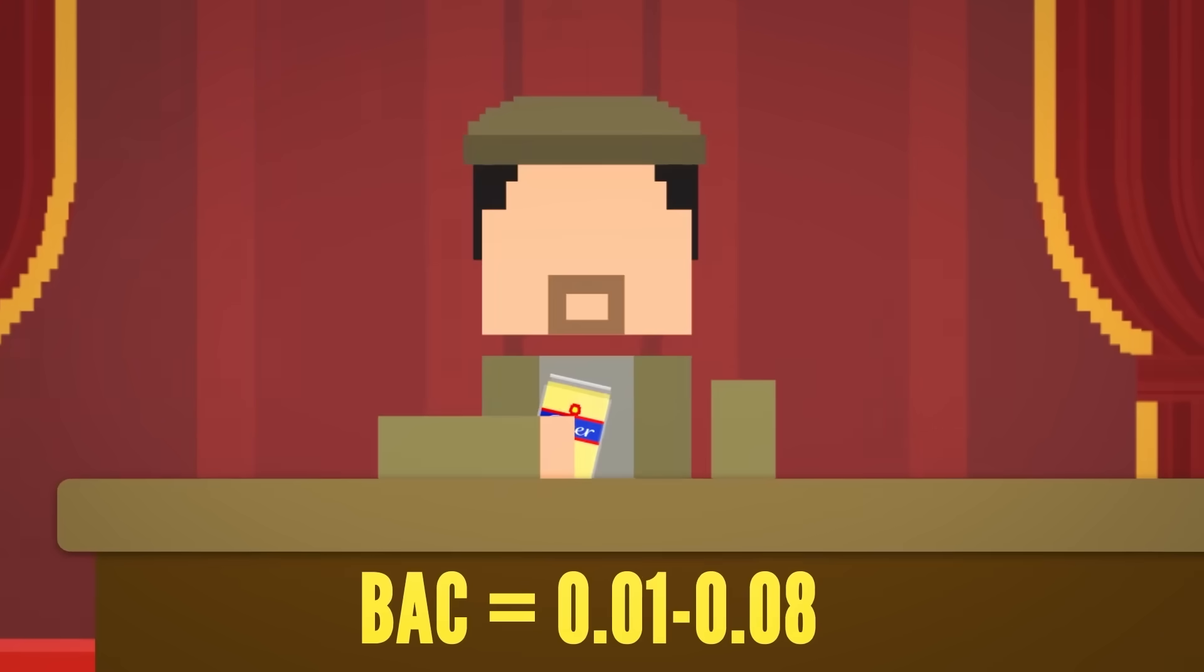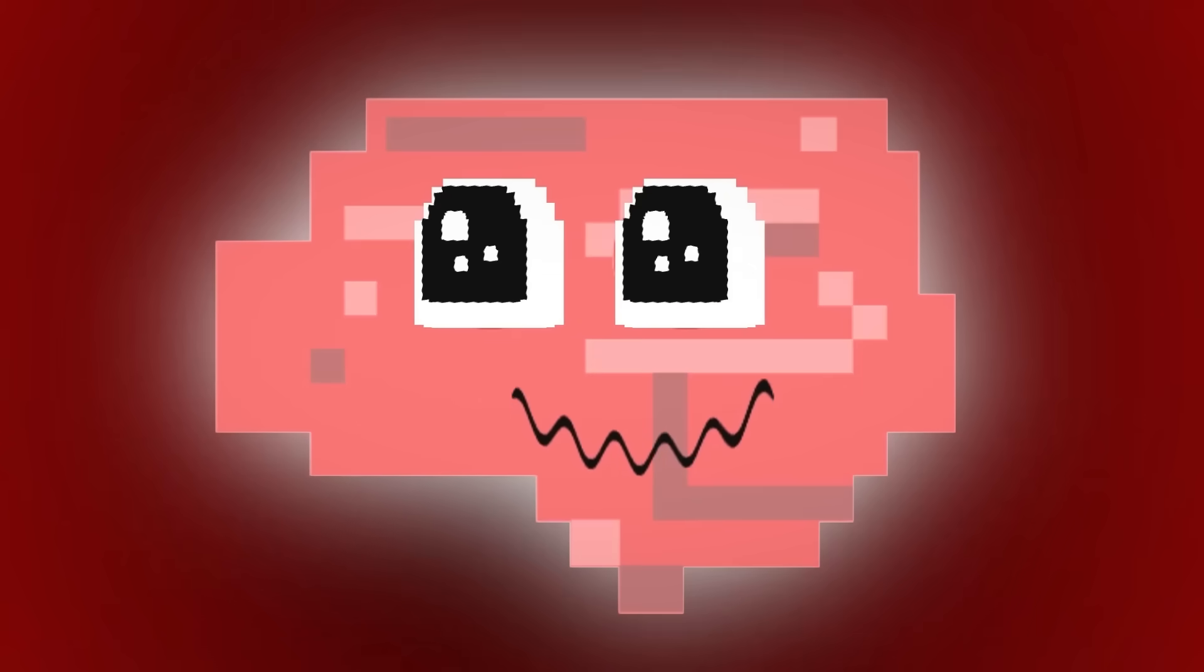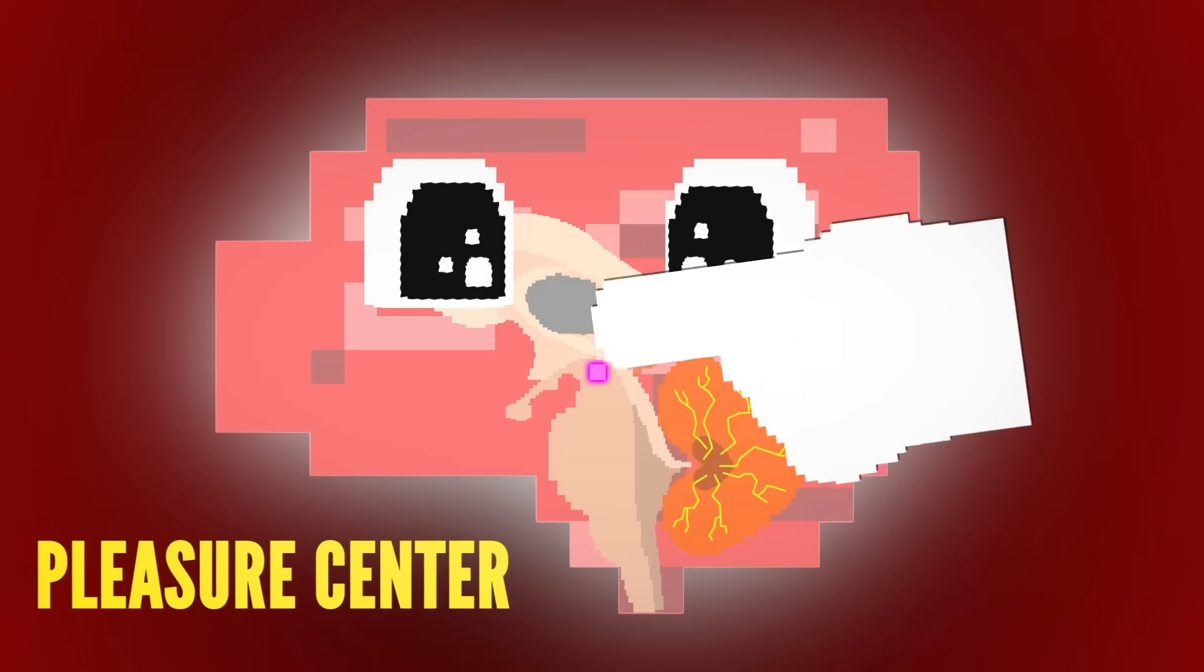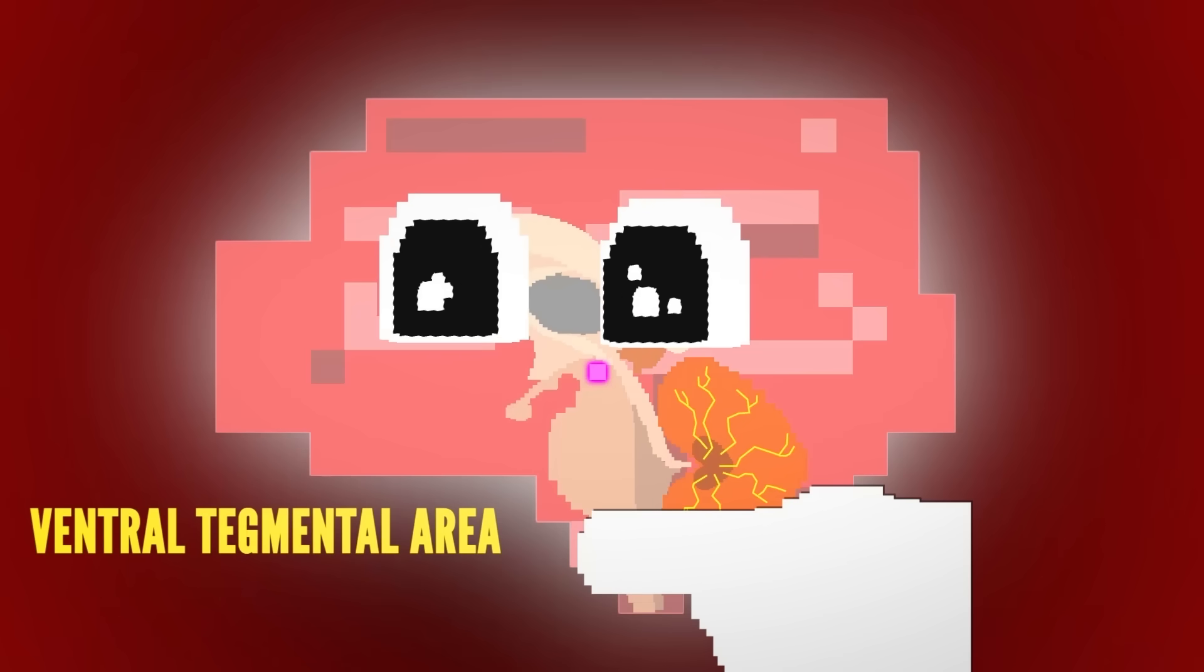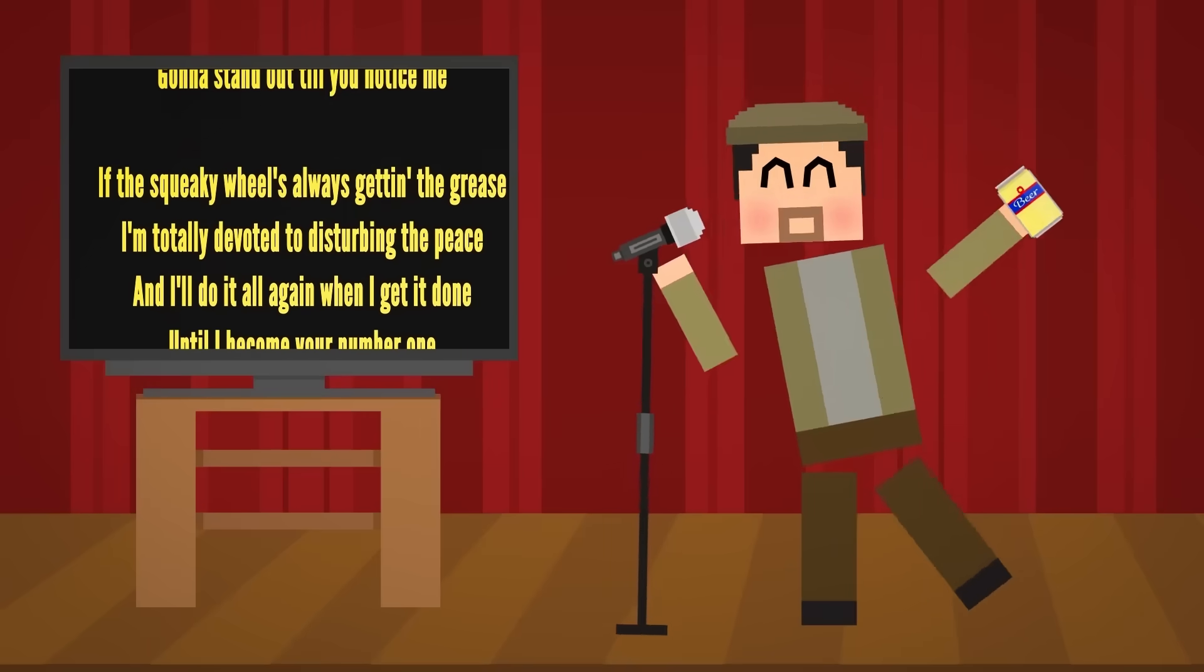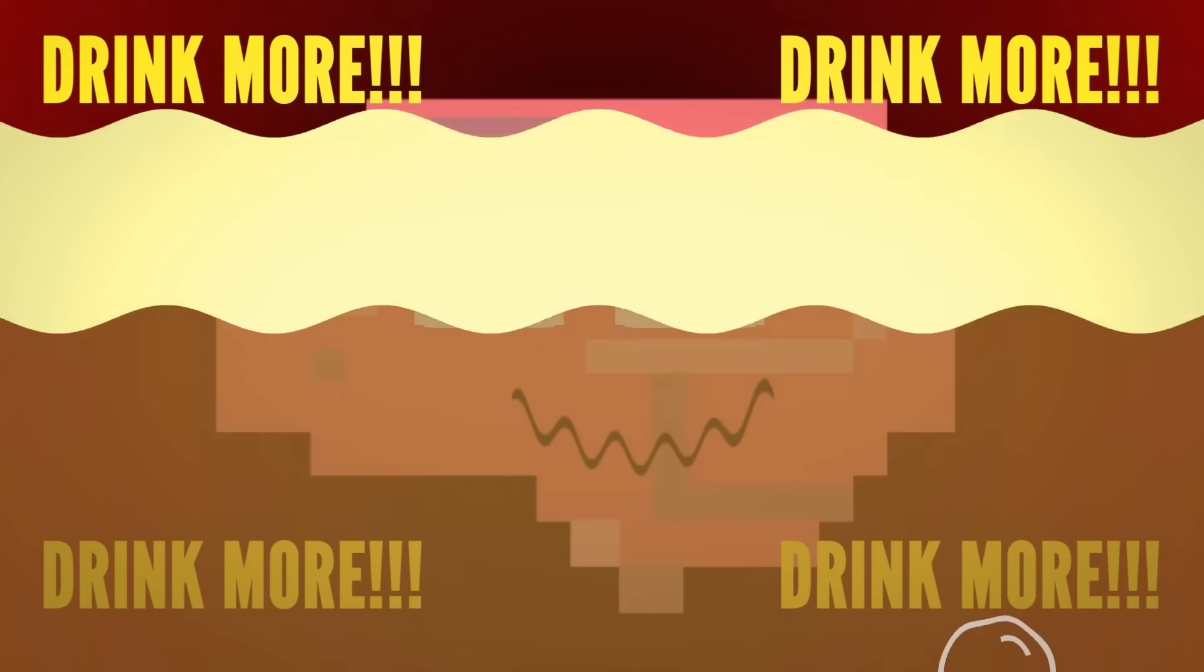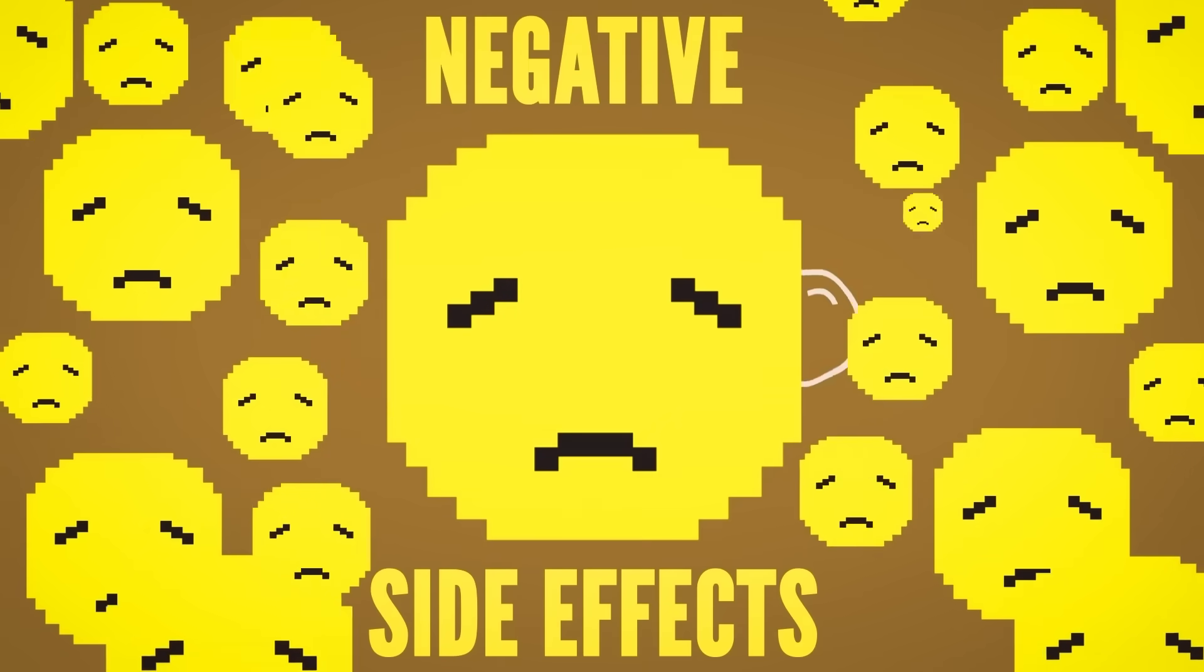At first, a lower BAC will make you feel euphoric. This is because alcohol activates a part of your brain known as the pleasure center. This region, called the ventral tegmental area, or VTA, produces dopamine, which makes you feel happy, relaxed, and confident. Sometimes a little too confident. These good feelings will tell your brain to drink more, but this will only lead to lots of negative side effects.